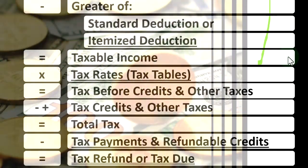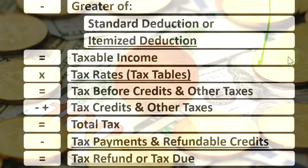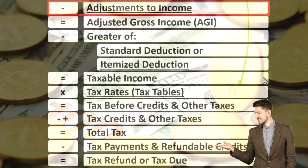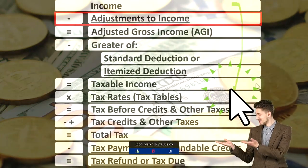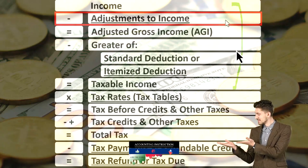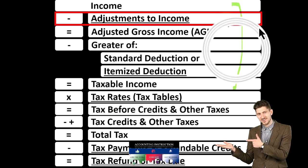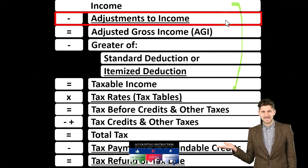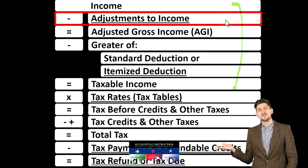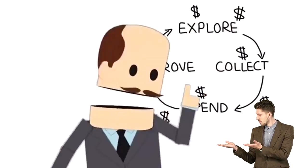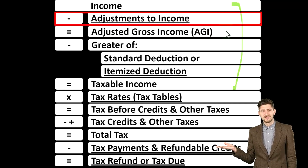Our goal is to get taxable income as low as possible, as opposed to a normal income statement where we want net income as high as possible. We call this second item adjustments to income — you might also hear them called above-the-line deductions or Schedule 1 deductions. You can think of them as deductions or contra income accounts, because they decrease income.